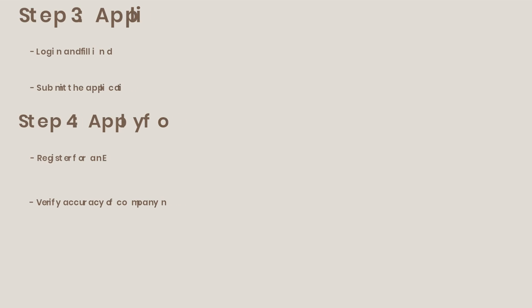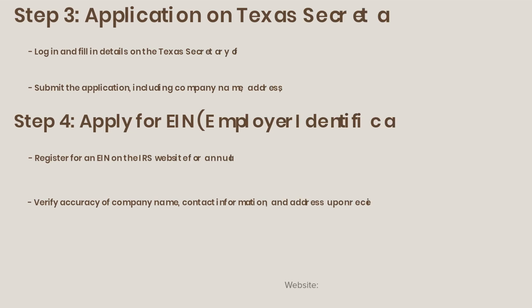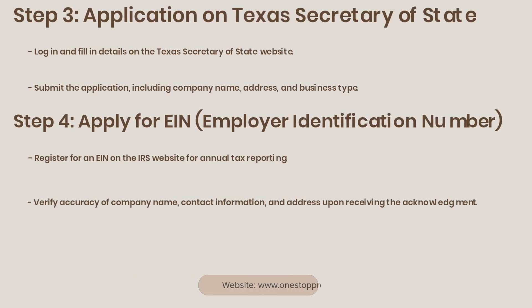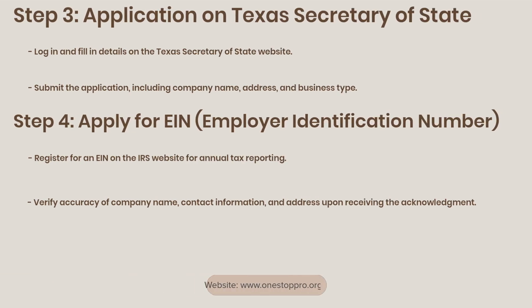Step 3: Application on the Texas Secretary of State. Log in and fill in details on the Texas Secretary of State website. Submit the application, including company name, address, and business type.